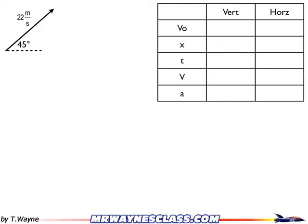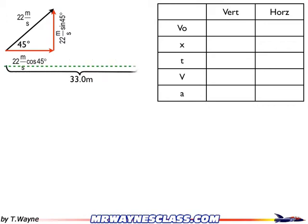I've got my little triangle for the initial velocity. I know because he kicks at 22 meters per second, 45 degrees, horizontally it's going to be 22 cosine 45, and vertically it's going to be 22 sine 45. The ball's going to travel along the ground 33 meters to the goal post, and the goal posts are 3.048 meters high.